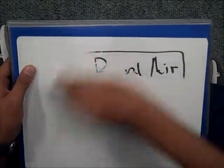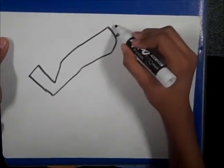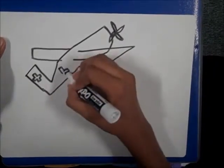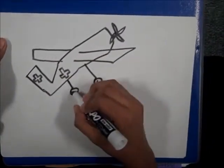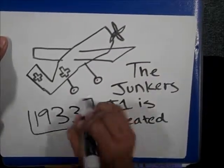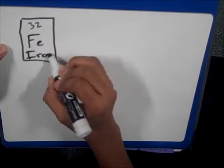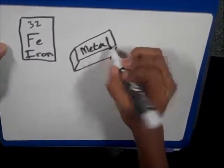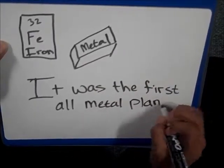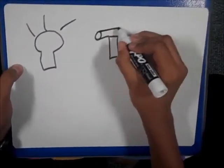The Junkers J-1 was created in 1933. This plane was the first all-metal plane. Metal was more durable than wood, so this plane was ideal in war and other dangerous areas.